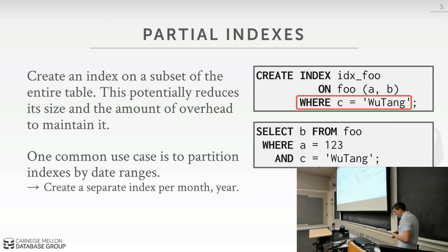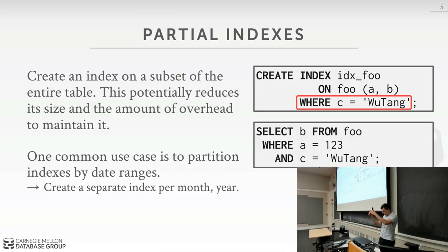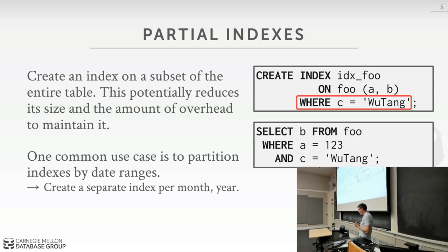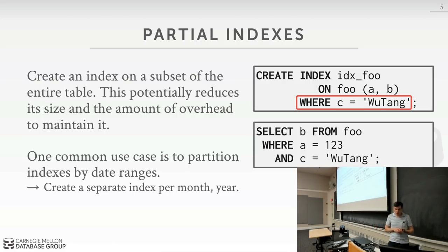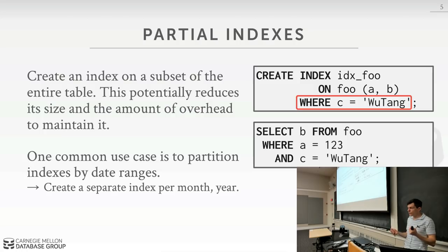This is a very common setup in a lot of applications when you want to partition the index based on things like date. You can have one index for each individual month, which reduces the size of the index and makes maintaining them easier because they're more compact. If you have queries that only focus on a single month, you don't have to swap a giant index into your buffer pool that has a bunch of keys that don't matter for you.